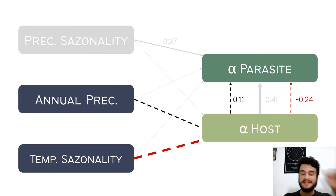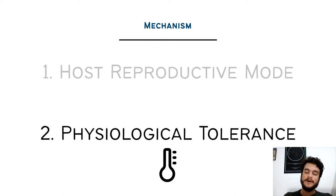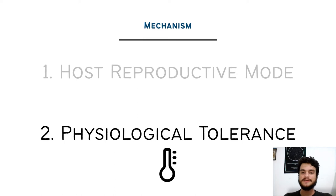The effect of annual precipitation is positive, and the indirect effect of temperature seasonality is negative. The mechanisms behind these relationships are probably related to the host reproductive mode. Annual precipitation is related to the availability of water bodies and wet environments, which are factors that positively affect host richness. Amphibians are also very sensitive to temperature extremes and water availability, so these indirect effects mediated by host richness are likely related to how host richness responds to water in relation to reproductive mode and physiological tolerance.